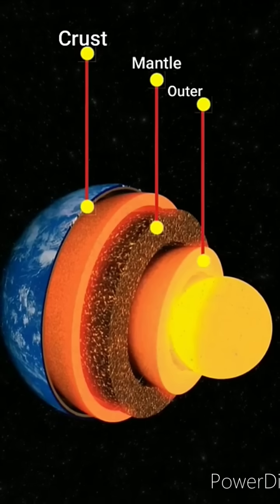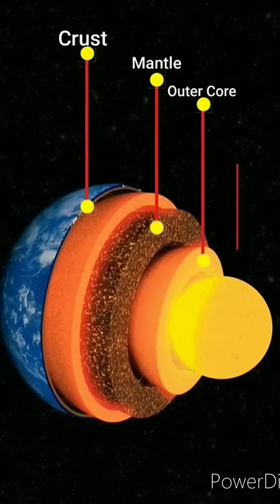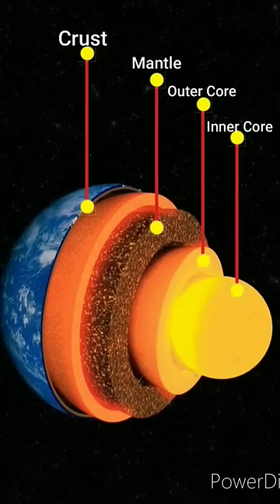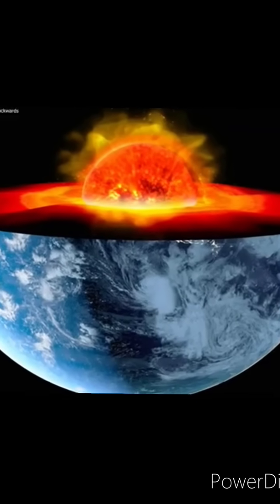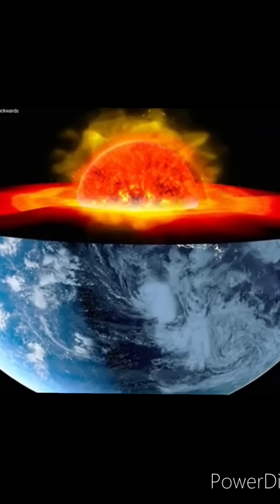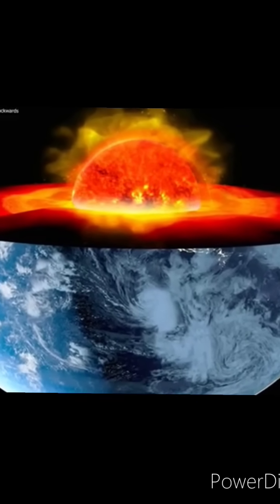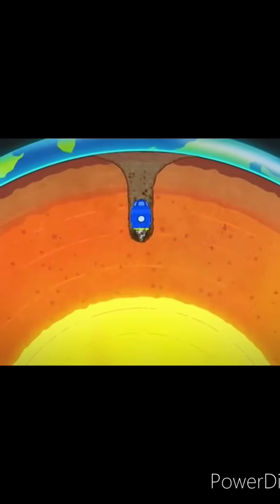The innermost layer is the outer core and the inner core. Did you know that the core is spinning in the opposite direction of the earth?